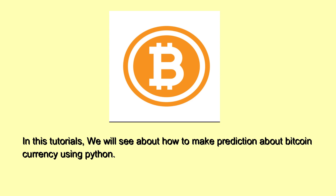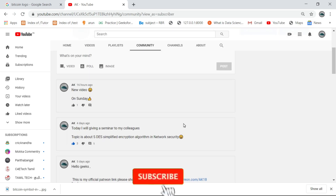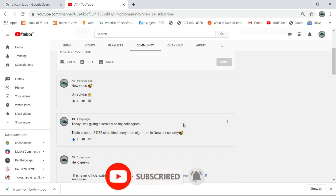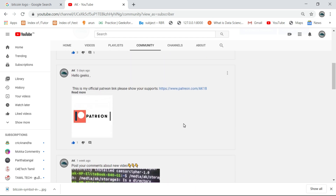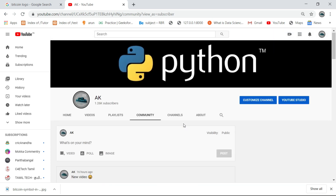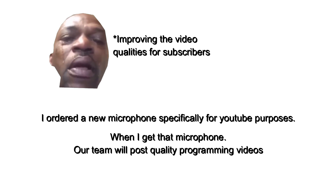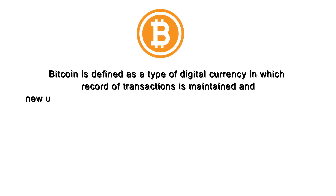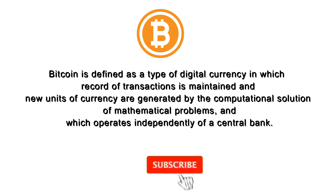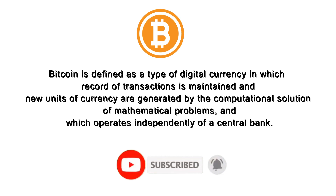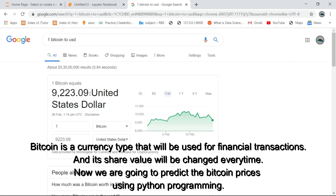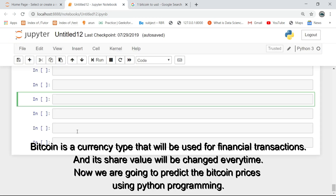Hello Python programmers. In this video we will see how to make a prediction of Bitcoin using Python programming. Bitcoin is defined as a type of digital currency in which a record of transactions is maintained and new units of currency are generated by the computational solution of mathematical problems, operating independently of a central bank. Bitcoin is a currency type used for financial transactions and its share value changes every time. Now we are going to predict the Bitcoin prices using Python programming.